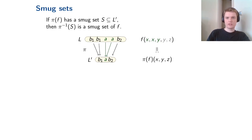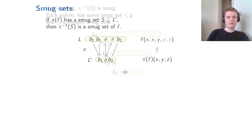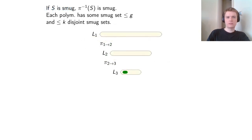The complication: if f has a smug set, the input witnessing it may not be of the form x, x, y, y, z in general, so we cannot deduce anything about π(f). Instead we have the reverse direction: if π(f) has a smug set S, then the pre-image of S is a smug set of f. The problem is that even if S is small, its pre-image can be very large.